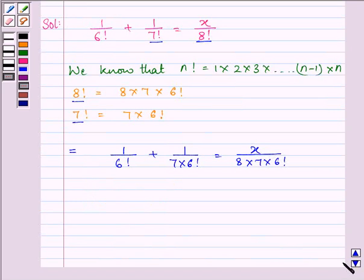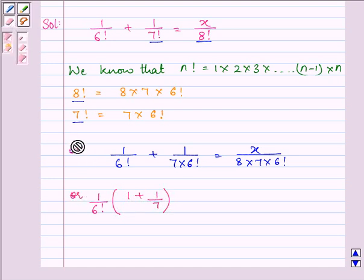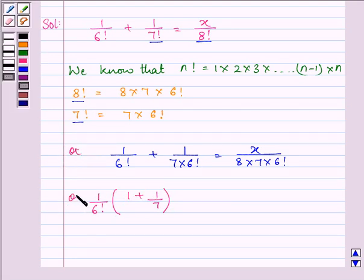Now taking 1 by 6 factorial common, we have 1 by 6 factorial times (1 plus 1 by 7) is equal to 1 by 6 factorial times x divided by 8 multiplied by 7.